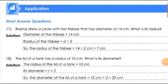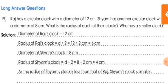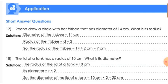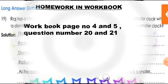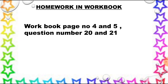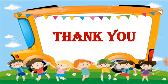The same type of questions are in your workbook — questions 17, 18, and 19. Go through these questions and understand how to find out the radius if the diameter is given, and how to find out the diameter if the radius is given. Try to do these in your workbook. I am also giving you homework: workbook page number 4 and 5, questions 20 and 21. We will discuss the workbook answers in the next class. Everyone study well and be safe at home. Thank you.